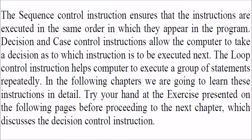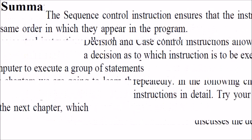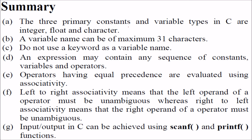We will skip the details of control instructions for now because looping, decision control, if, while, and else will all be covered with many examples later. To summarize what we have seen: there are three primary constant and variable types in C - integer, float, and character. Variable names can be any length, but best practice is to keep them to 31 characters. Do not use keywords as variable names as they are reserved words.